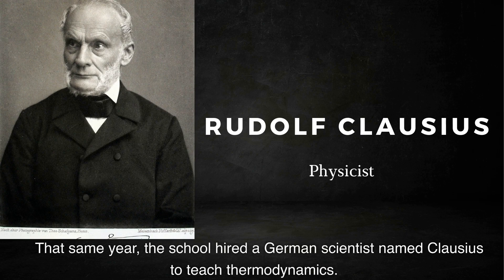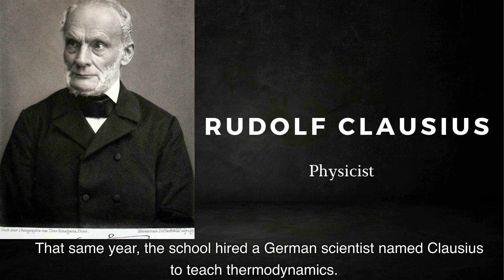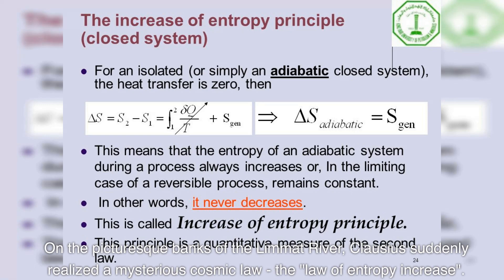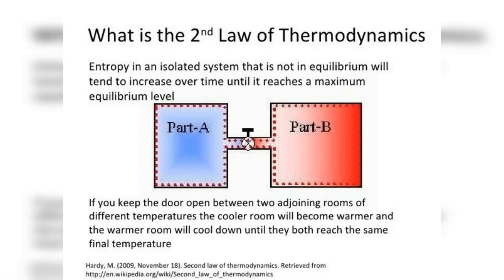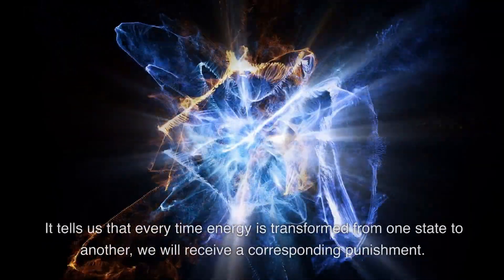That same year, the school hired a German scientist named Clausius to teach thermodynamics. On the picturesque banks of the Limmat River, Clausius suddenly realized a mysterious cosmic law: the law of entropy increase. The world's disorder is increasing, just like everything in our house tends to become disordered. Why dirty clothes do not become clean by themselves, why cold water cannot boil itself, and why all disorders cannot automatically return to order.